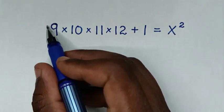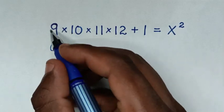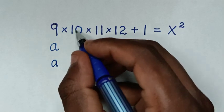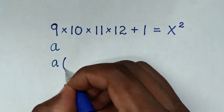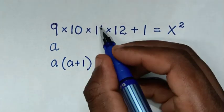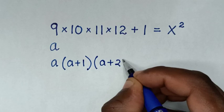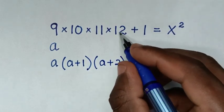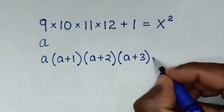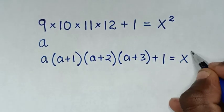we let a equal 9. So in this equation it will be 9, which is a, times 10, which is (a+1), times 11, which is (a+2), times 12, which is (a+3), then plus 1 is equal to x squared.